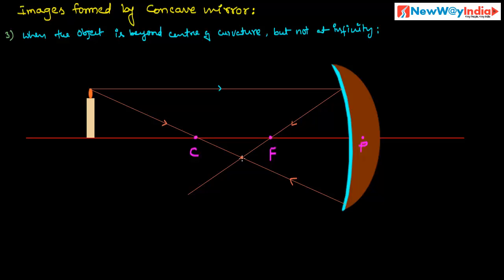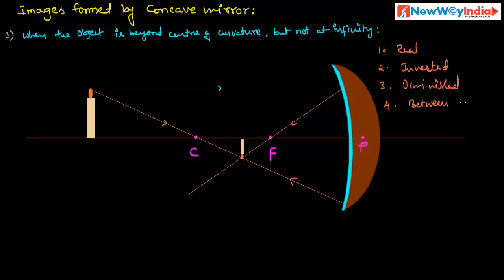At that point the image is formed. The characteristics of this image when the object is placed beyond center of curvature are: first, it is a real image; second, it is inverted; third, it is diminished; and fourth, it is formed between the center of curvature and the principal focus, that is, between C and F.